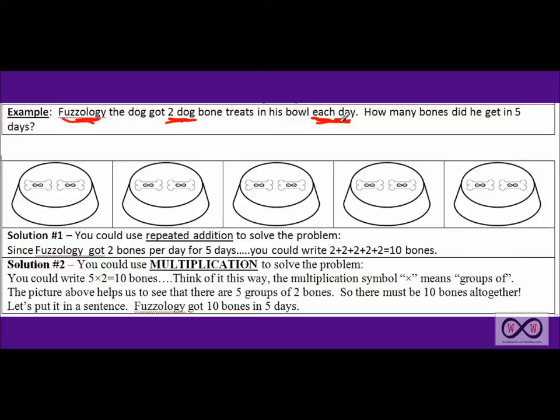And now we have the questions. This is our math job. We have to determine how many bones did he get in five days. We have that number five. So five and two are the main math clues that we have.